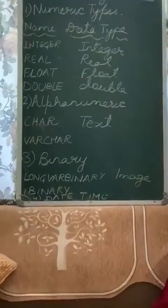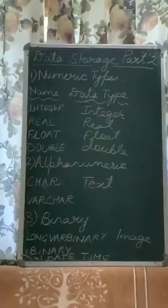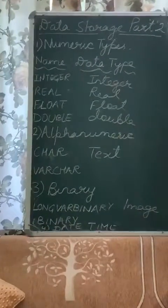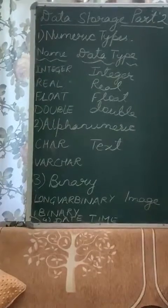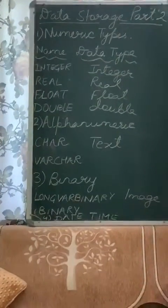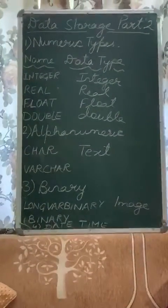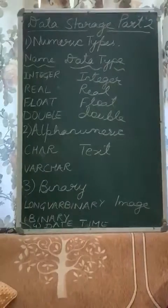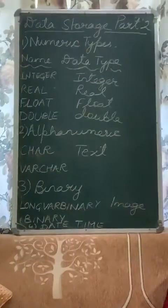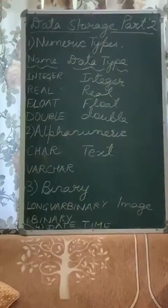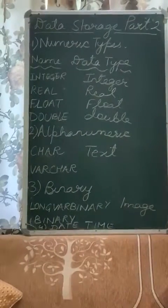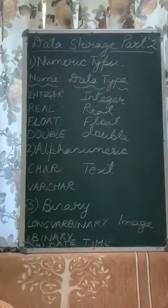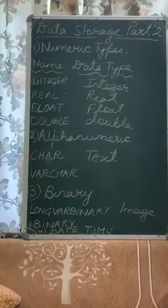The next category is alphanumeric type. As the name suggests, it is a combination of alphabets and numbers. There are two types: CHAR and VARCHAR. CHAR, spelled C-H-A-R, is used for storing text values — for example, your name or school name, any text containing only alphabets. VARCHAR is used when data is a combination of alphabets and numbers, for example an address like '62 Rajpur Road, Dehradun' or 'House No. 56, Lane 2, Rajpur Road'.